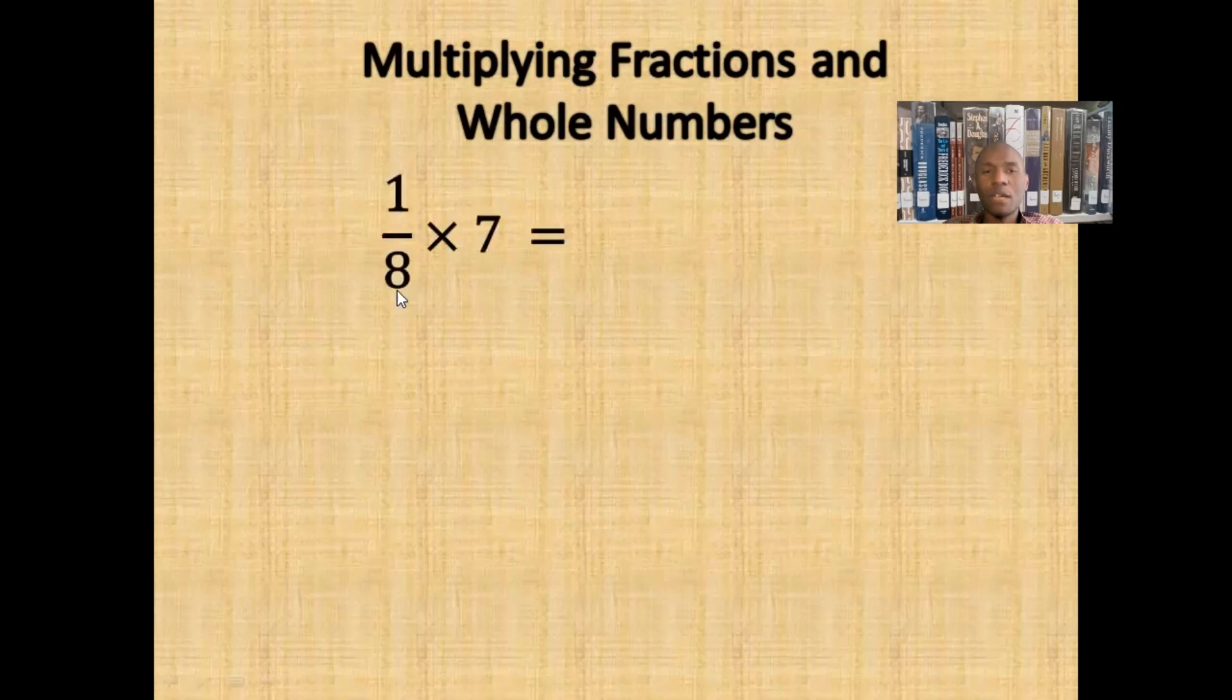Suppose we have 1/8 times 7. To multiply a fraction by a whole number, we would put the whole number over 1 to turn it into a fraction. Thus, we get 1/8 times 7 wholes. Then, we will multiply the fractions together.